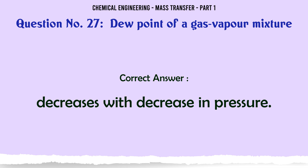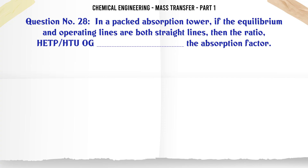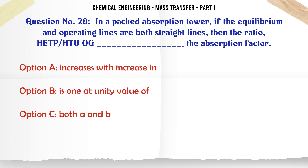In a packed absorption tower, if the equilibrium and operating lines are both straight lines, then the ratio HETP/HTU(OG) [equals the absorption factor A]. A. Increases with increase in A. B. Is one at unity value of A. C. Both A and B. D. Neither A nor B. The correct answer is Both A and B.